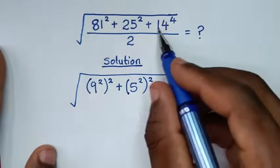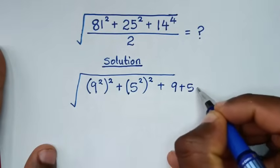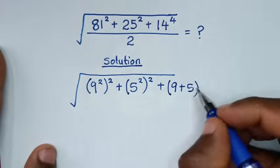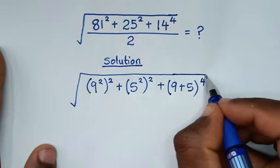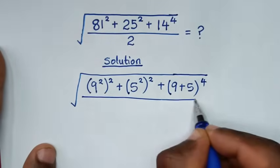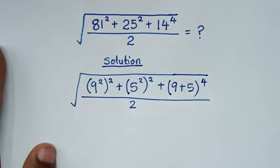So this 14 is the same as 9 plus 5, bracket this to the power of 4, then over 2.